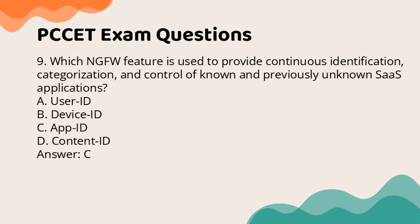Question 9: Which NGFW feature is used to provide continuous identification, categorization, and control of known and previously unknown SaaS applications? a. User ID. b. Device ID. c. App ID. d. Content ID. Answer: c.